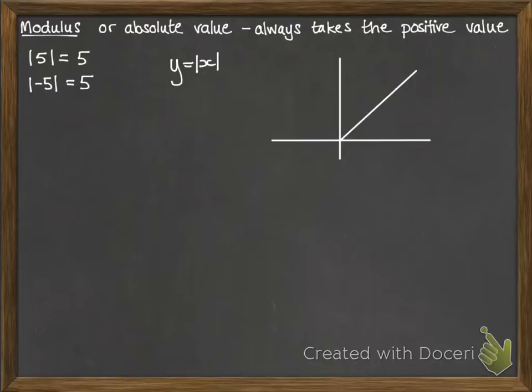So y equals x would look like this, and it would have the underneath part just there. But since we're doing y is the modulus of x, anything that was negative is now turned into a positive, so it gets reflected in the x-axis. We don't have anything that goes below it. Those negative values are turned into positive values.